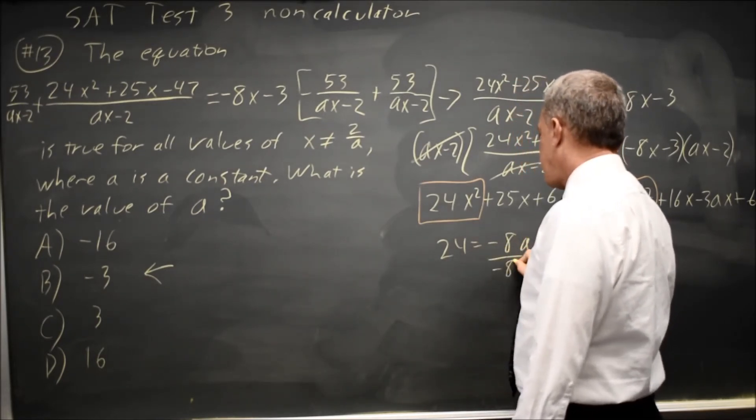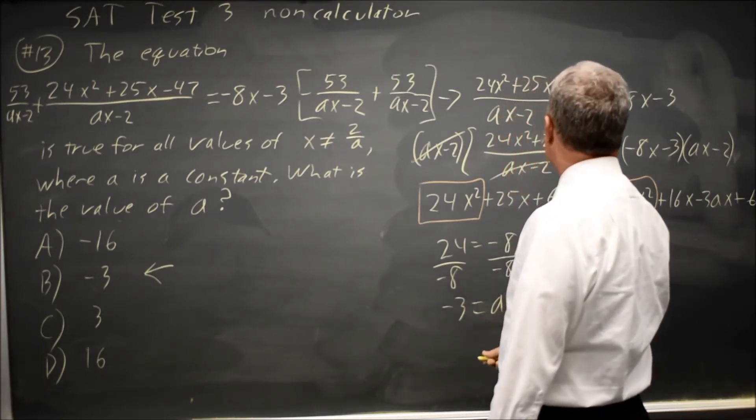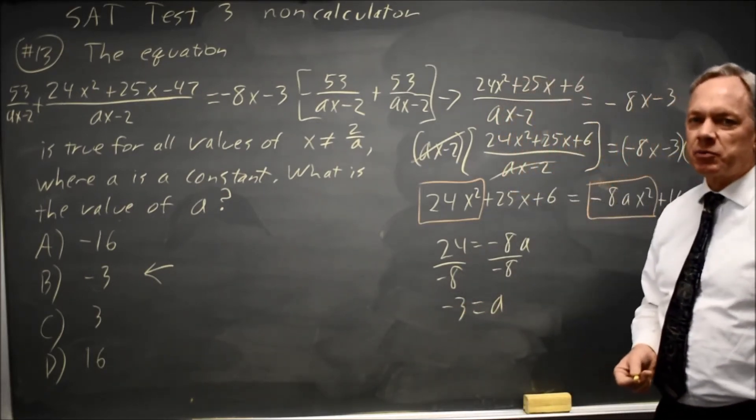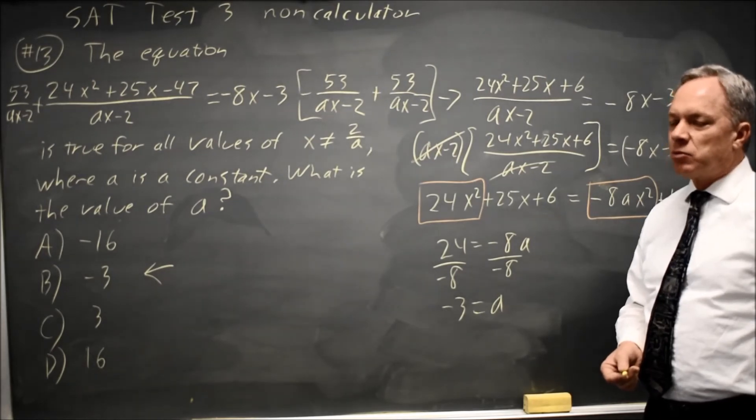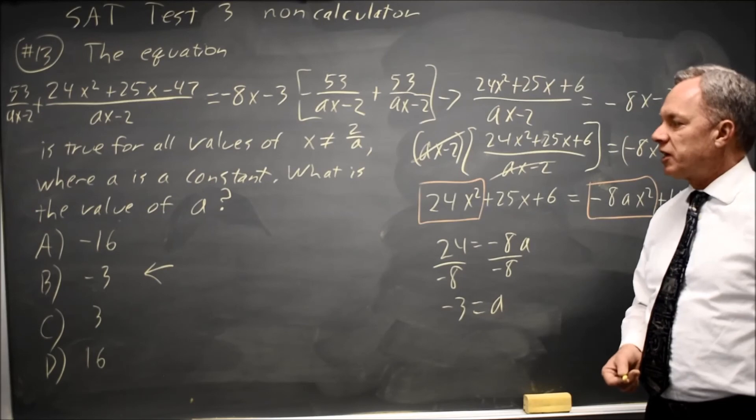So 24 equals negative 8A, divide by negative 8, negative 3 equals A. That's not a lot of steps, but each step is somewhat more involved than the steps when I substitute in X equals 1, so I prefer substituting in values.